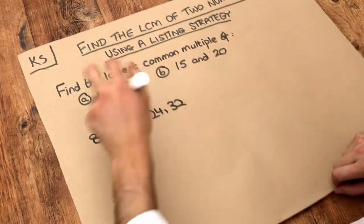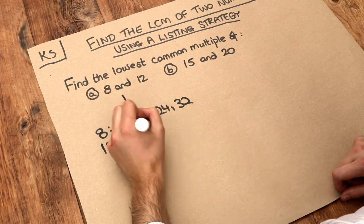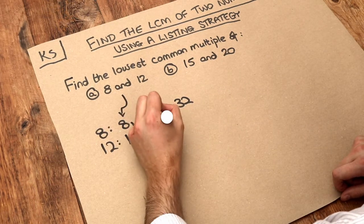Now if we do the same for the other number, the 12, and we list out a few multiples. Well one lot of 12 is 12. Two lots of 12 is 24. Three lots is 36, etc.